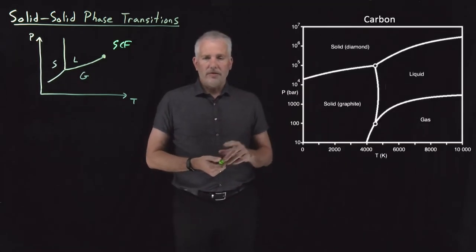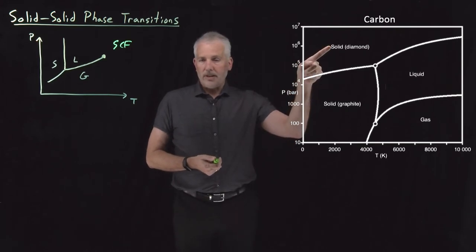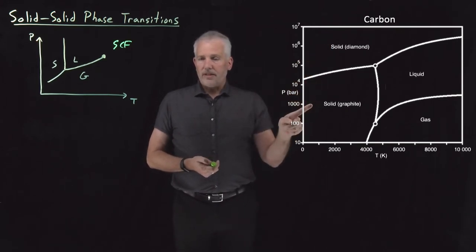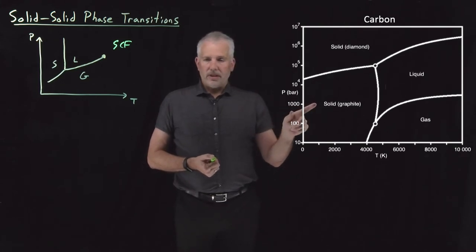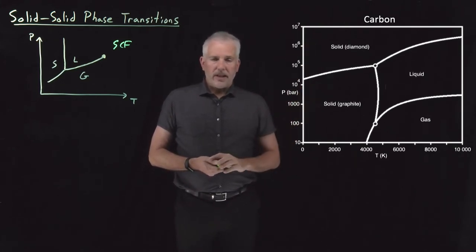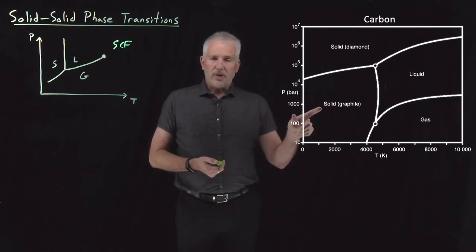Carbon has a solid phase that you're familiar with in the form of diamond, also has a solid phase in the form of graphite, both of which you've at least seen in everyday life and if not had a personal experience with.